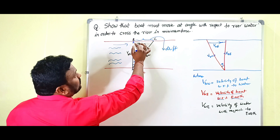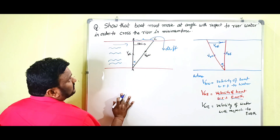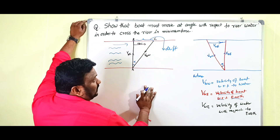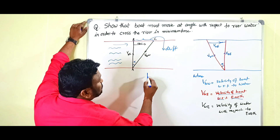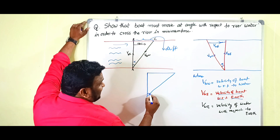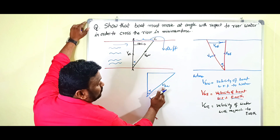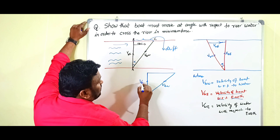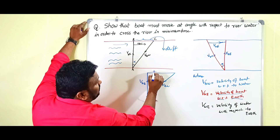Because of the water current, instead of reaching B we reach point C. So BC is called the drift. In that case the diagram forms a triangle. The angle is alpha, v_bw is the velocity of boat with respect to water, v_be is the resultant velocity, and v_ew is the velocity of water with respect to earth.